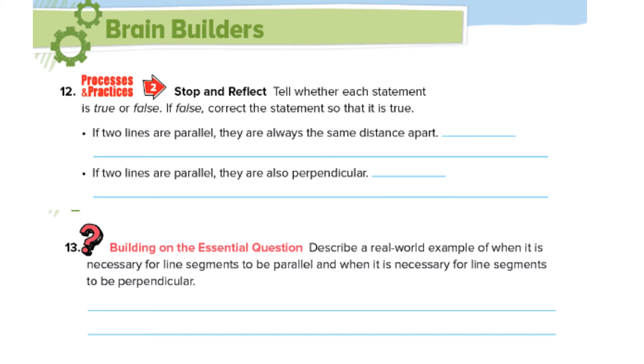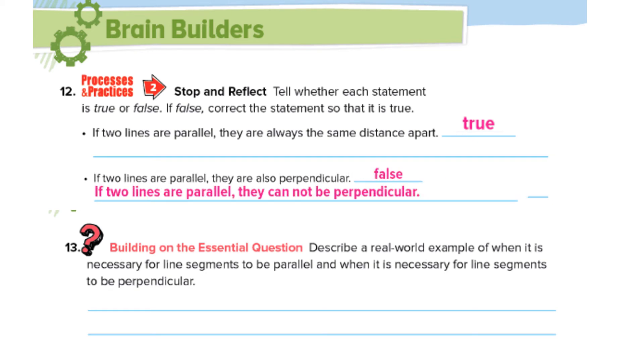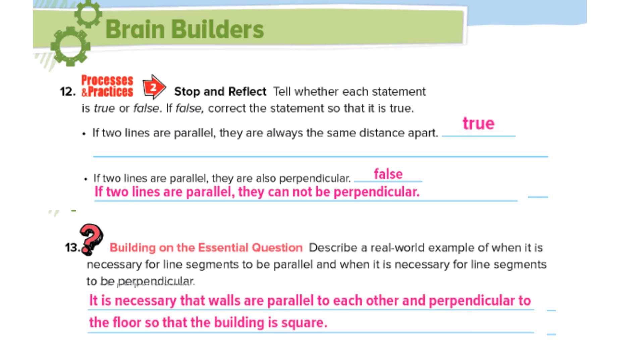Let's continue with 12 and 13 at the bottom of the page. See if you can answer both of these. Stop the video and start it again when you're ready to correct. If two lines are parallel, they are always the same distance apart. That is true. If two lines are parallel, they are also perpendicular. No way, because if they're parallel, they can never come together, right? And number 13, describe a real world example of when it is necessary for line segments to be perpendicular. So walls are parallel, but they're also perpendicular to the floor. That's one example.